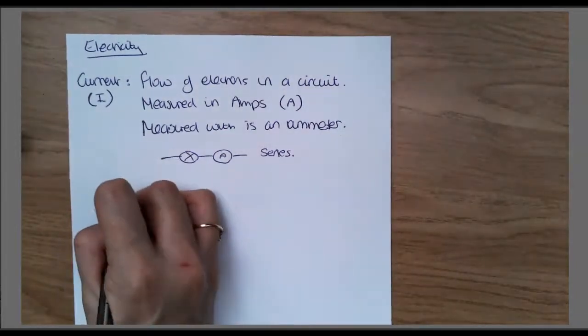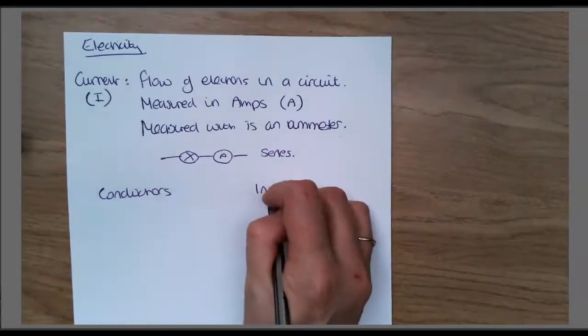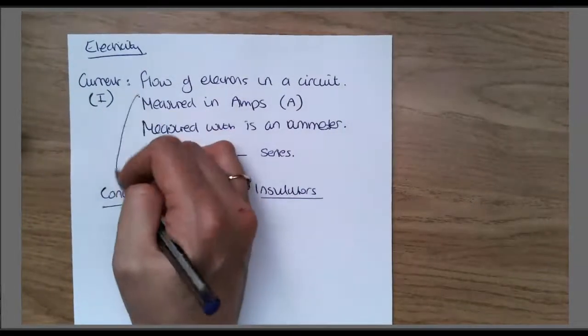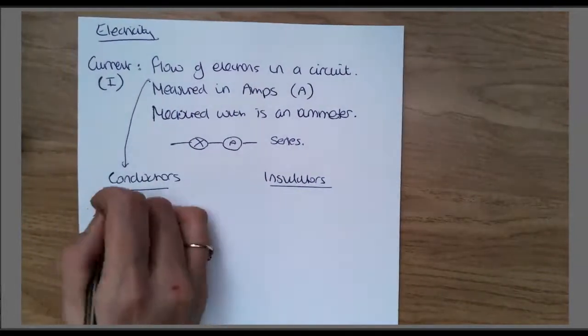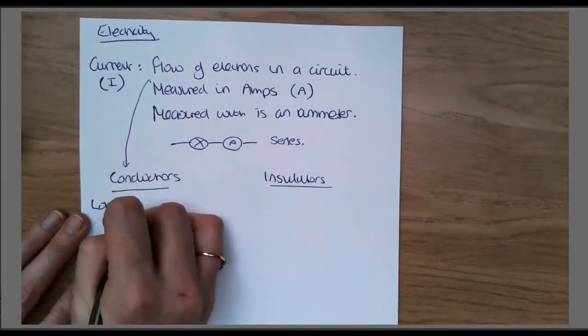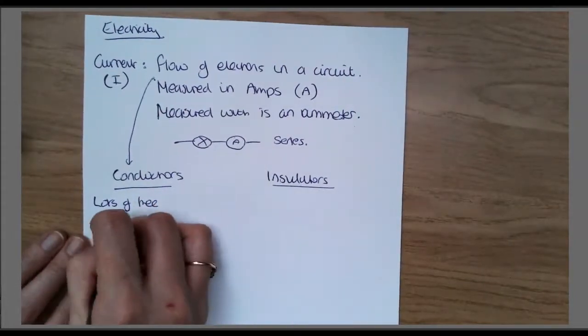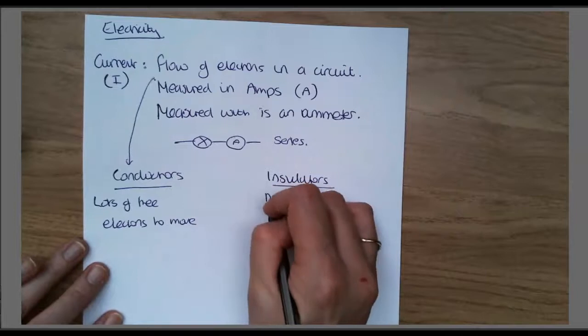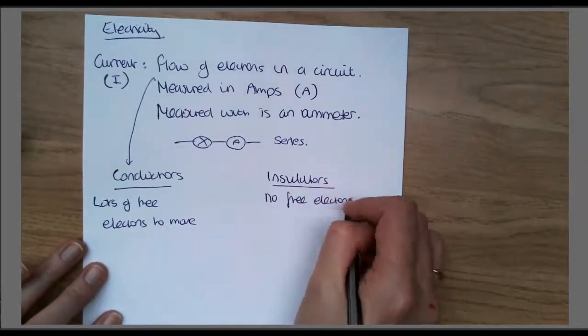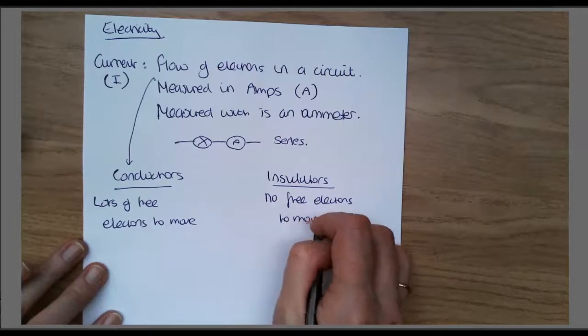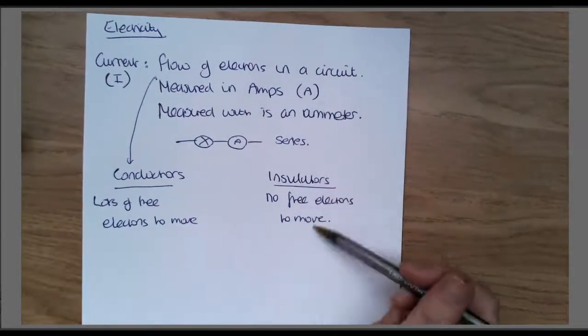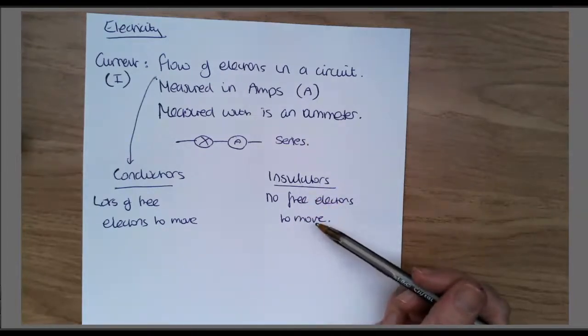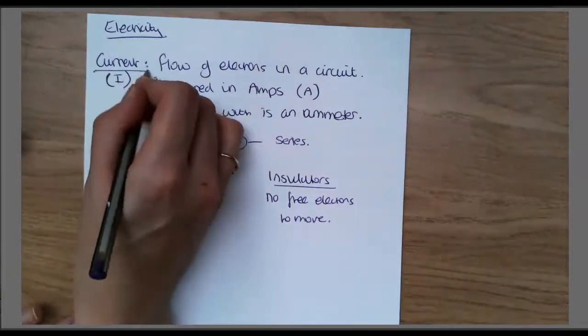We have conductors and insulators. In a conductor, current flows really easily. We have lots of free electrons to move. In an insulator, there are no free electrons to move so you don't get current flowing. As we just talked about with static electricity, to get the electrons to move, we have to apply force of friction.